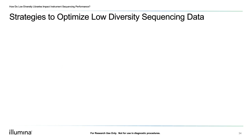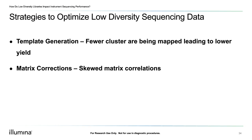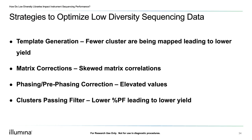To summarize how low diversity libraries can impact instrument sequencing calculations: first, fewer clusters are typically mapped, resulting in lower overall yield. Because we may not have signal from all bases during matrix generation, low diversity libraries can result in a skewed matrix calculation. Phasing, pre-phasing, or both may be elevated. Low diversity libraries can also result in a lower overall yield, and we may see lower quality scores as a result of the impact of low diversity libraries on all of the above calculations.